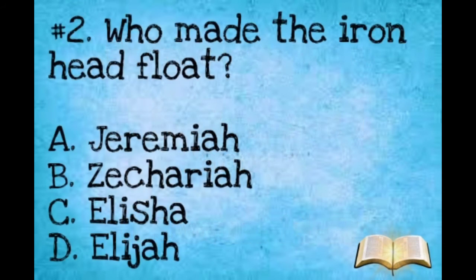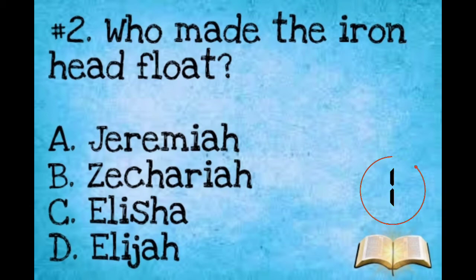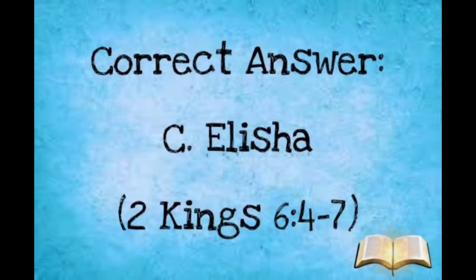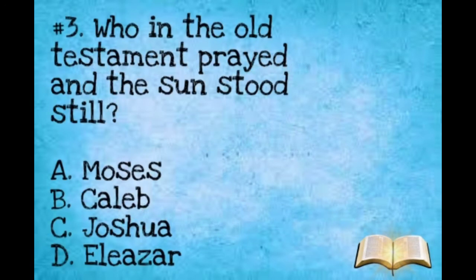Number two: Who made the iron head float? A: Jeremiah. B: Zechariah. C: Elisha. D: Elijah. The correct answer is C, Elisha.